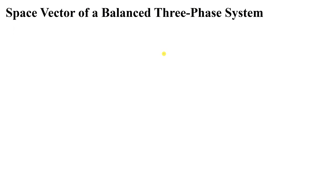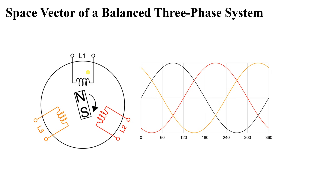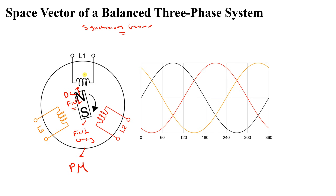Let me explain this. We have in reality — let's talk about a synchronous generator. As we know, on our rotor we have our field winding; it can be a field winding or it can be like here a permanent magnet that provides a constant DC field. When our rotor starts rotating, this DC flux field will cut the three phases of the stator: phase A, phase B, and phase C. Then you will find that we will have three generated voltages: Va, Vb, and Vc — three-phase voltages.